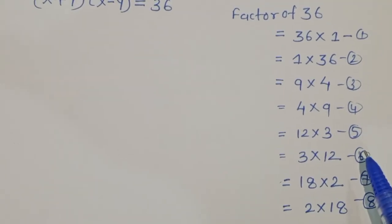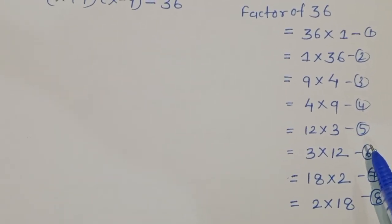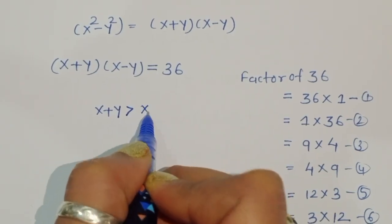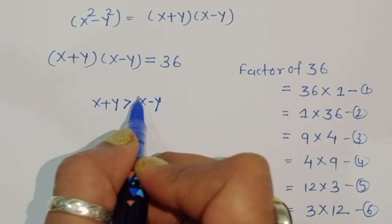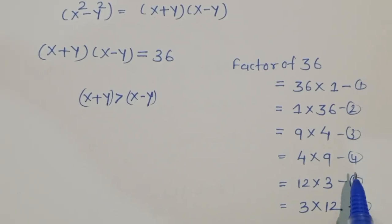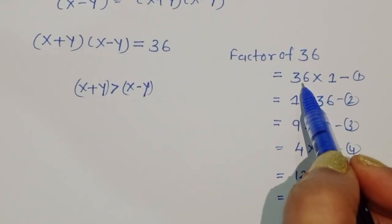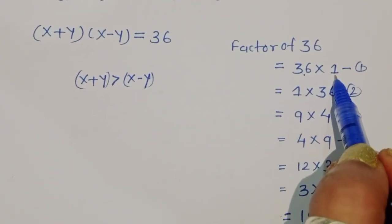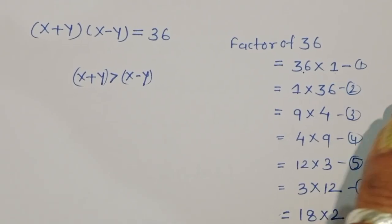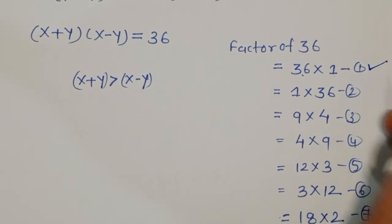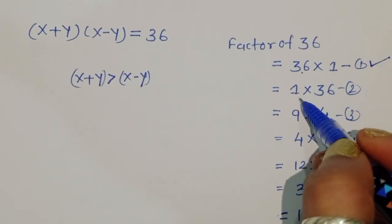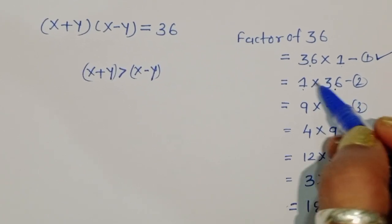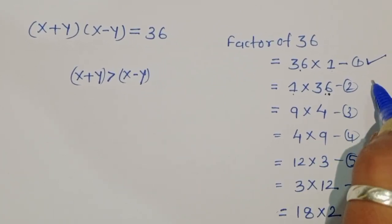One condition is that x + y is always greater than x - y. So if we consider x + y = 36 and x - y = 1, then 36 is greater than 1, so this is a correct factor pair. But if x + y = 1 and x - y = 36, then x + y is less than x - y, so this is rejected.